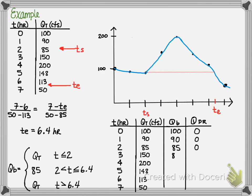At time 1 hour, our base flow is 90, and our direct flow is 0, because 90 minus 90 is 0. At hour 3, our total is 150. However, our base flow is 85, and our direct runoff is 65. If we continue repeating this, we will be able to calculate both the base flow for every time step and the direct runoff.